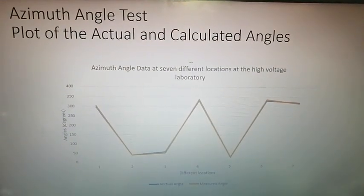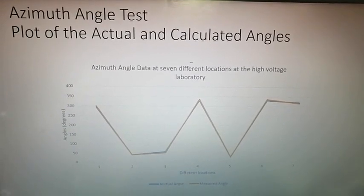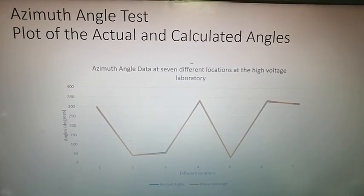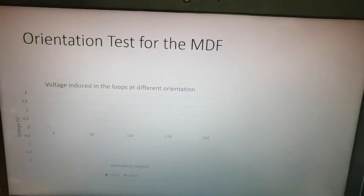The graph shows the azimuth angles measured by the magnetic direction finder with an error of plus or minus 4.4% when compared to the actual angles. One of the tests that was done on the loop antenna is the orientation test.